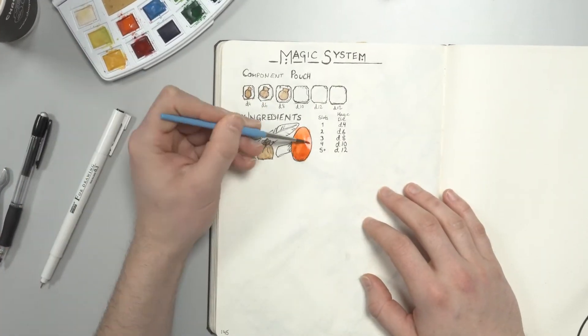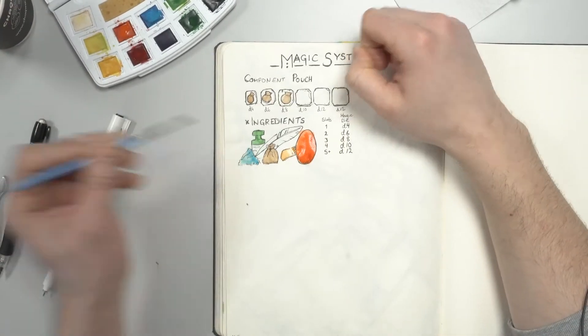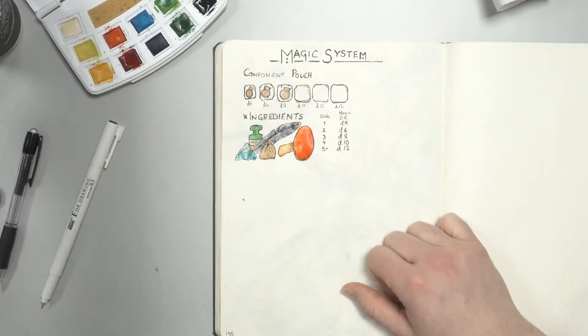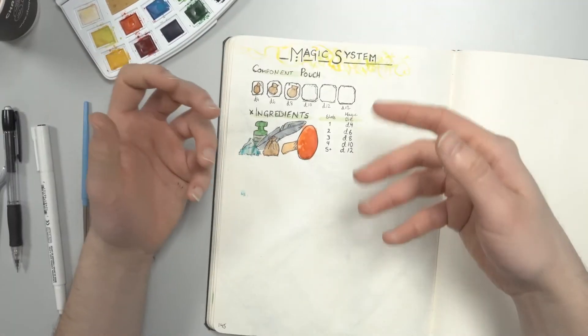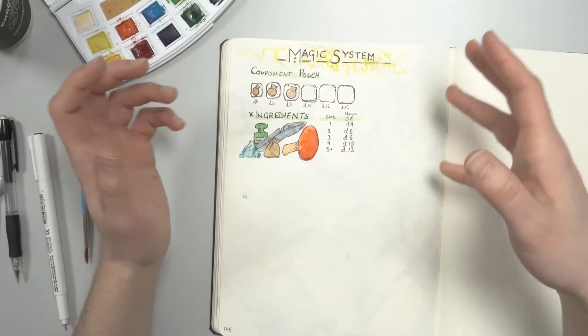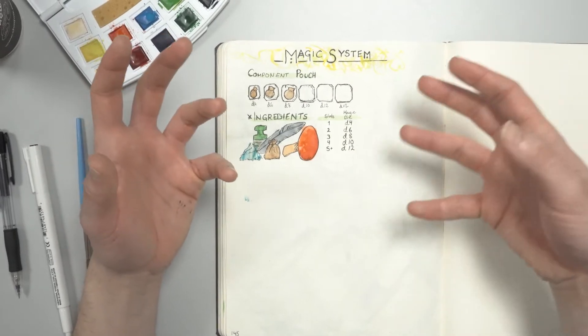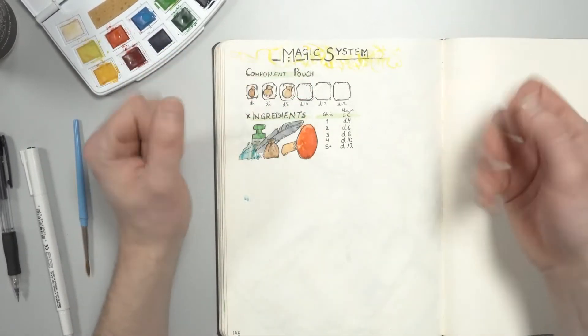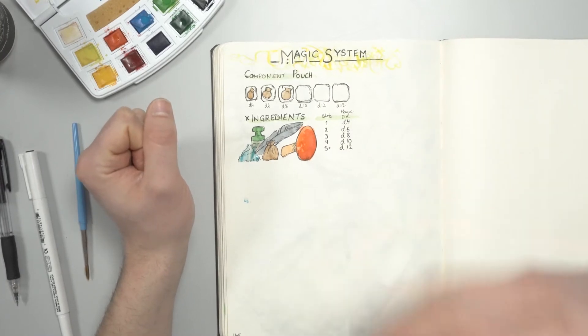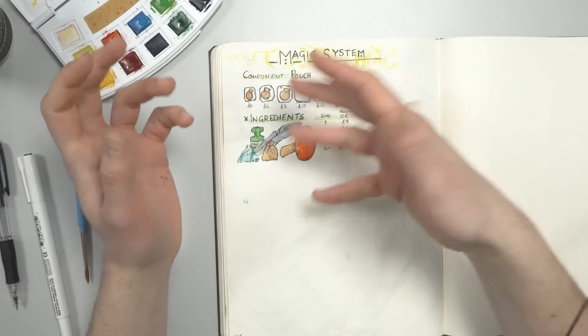If you start with two slots with ingredients and fail your roll with a d6 magic die, you're left with one slot of ingredients and therefore only a d4. This makes it so that more ingredients give you higher dice and the opportunity to cast bigger spells.